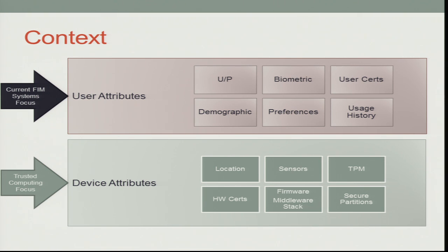There is a huge other set of attributes associated with you that relate to the devices you use. It could be the location of your device, the sensors on your device, or the different types of sensors available. The first thing that probably came to mind is the TPM — the various registers in the TPM — and how you leverage information stored there to evaluate trust on that system.